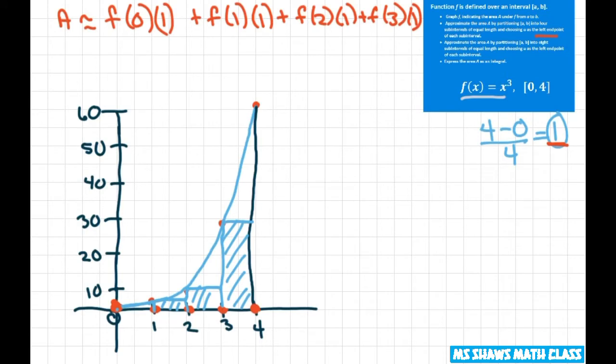And when you write this out, you're going to get 0 plus 1 because we're just multiplying by 1. So I'm just doing f of 1, f of 2, 2 cubed is 8 and 3 cubed is 27. And this is going to equal 36.